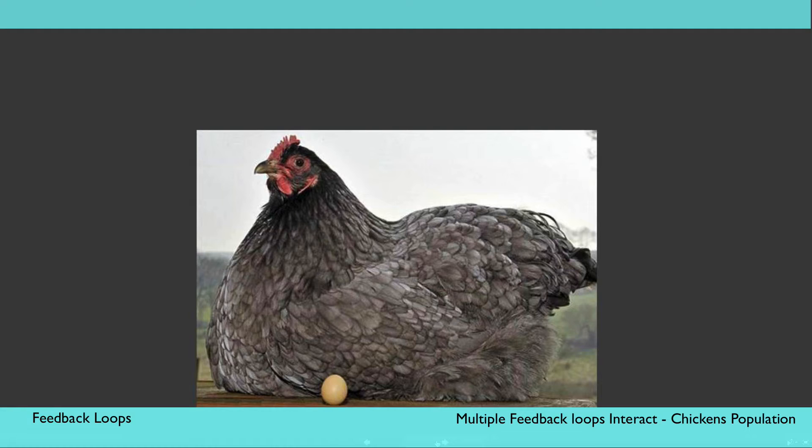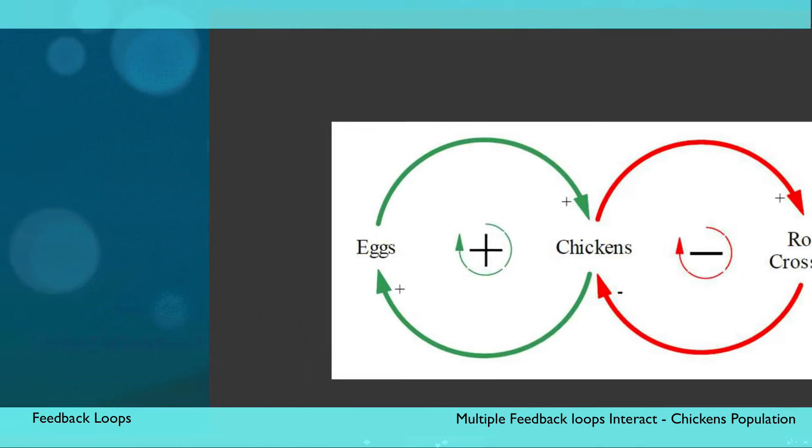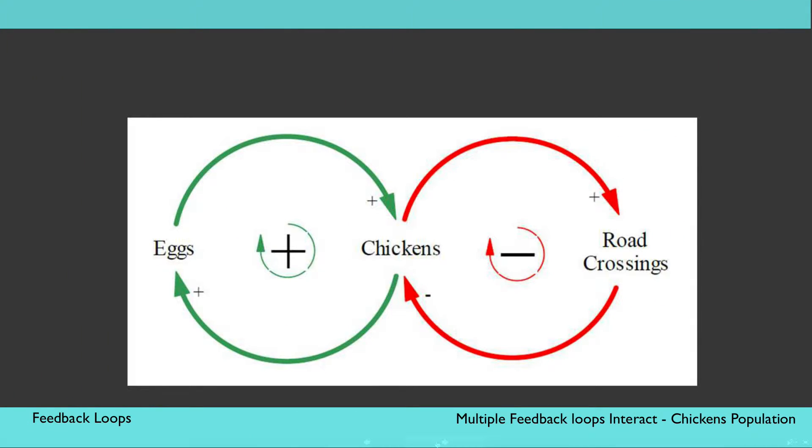Let's move from looking at one single feedback loop, to a situation involving multiple interacting feedback loops. Here is a more dynamic and humorous example, where both a positive and a negative feedback loop are intertwined. We can look at the chicken population trend through the concept of feedback loops.